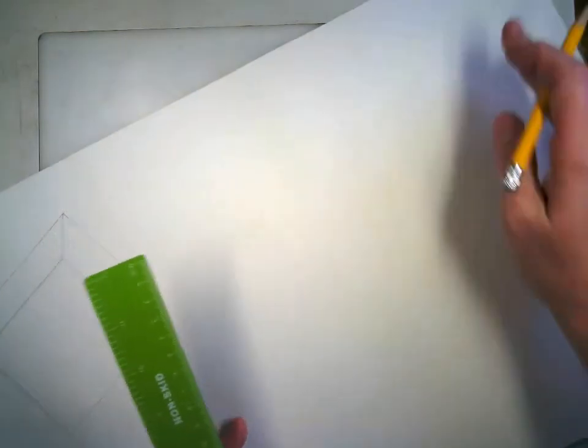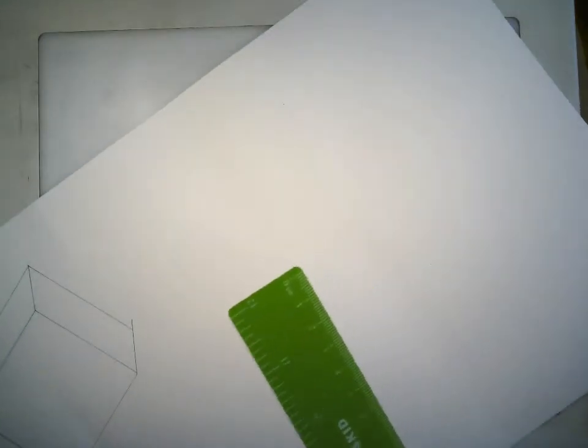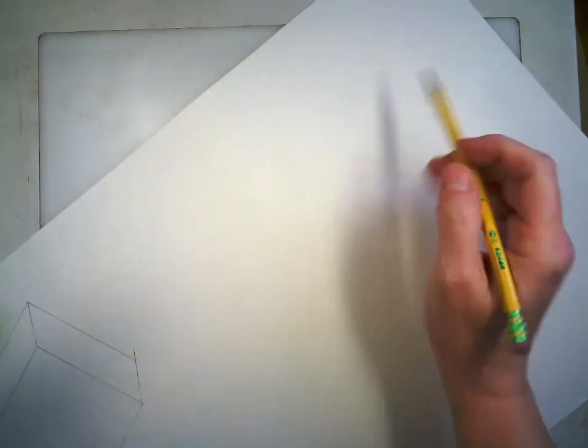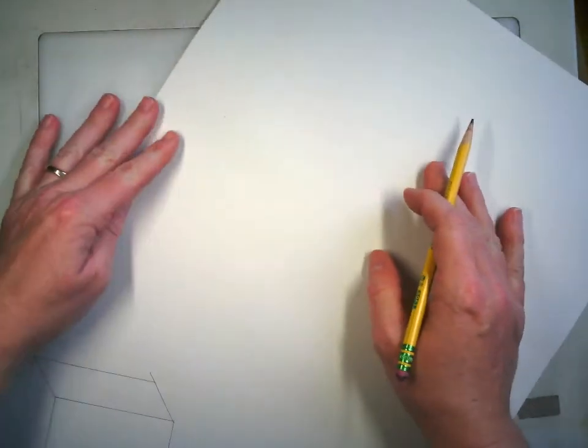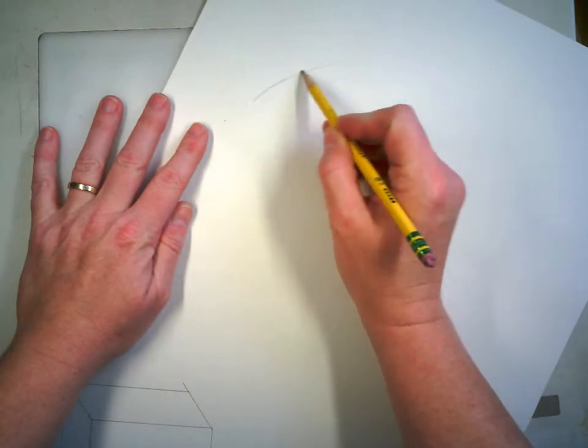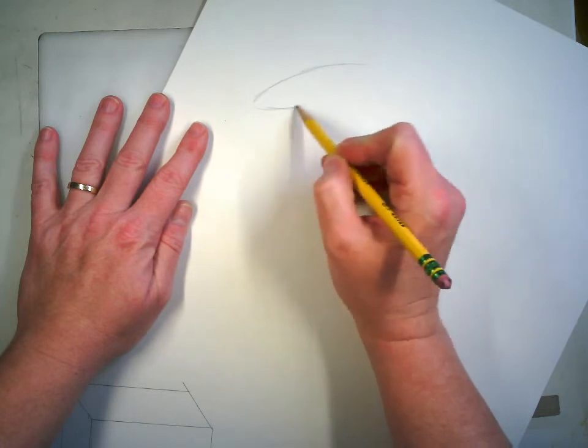So we're going to turn the paper, and we're going to draw a cylinder next. And a cylinder has the elliptical top, so I'm going to turn it kind of this way. And again, I want the top of my cylinder to be about 3 inches across, give or take.